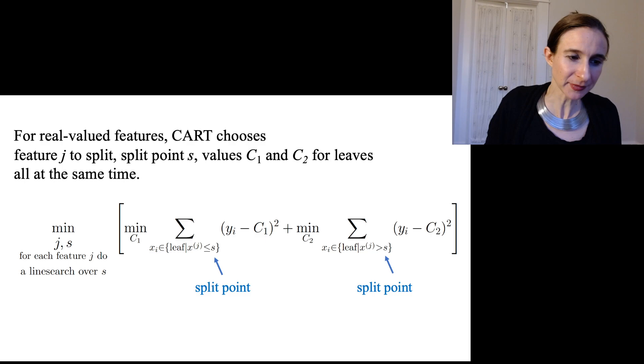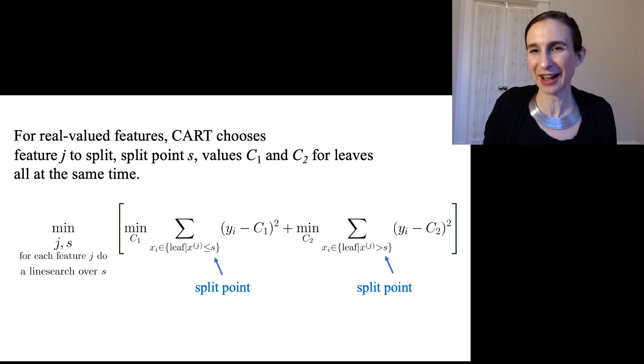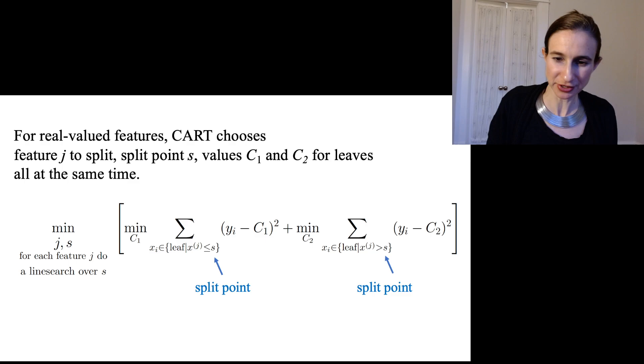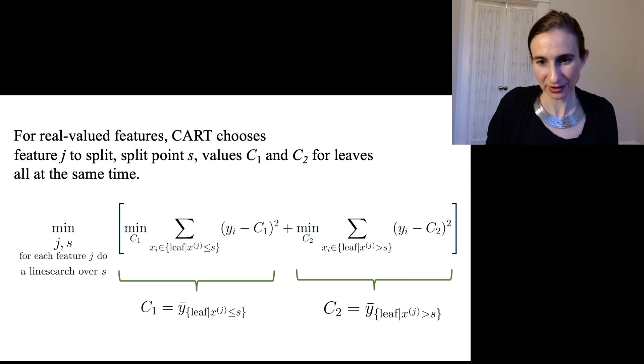So it chooses, for real valued features, it chooses the feature to split on and the split point. And then it chooses the values within the leaves, which I called here C1 and C2, but C1 and C2 are just the average of the labels within the leaves. So it's saying I'm going to minimize over all choices of features, over all split points, given those features, of the total squared error. And then to get the total squared error, you have to consider what is the value in the leaf, which is the minimizer of the squared loss, which again is just the average of the labels within the leaf.